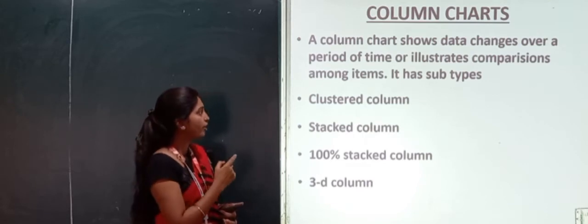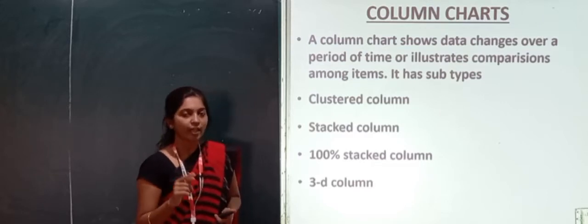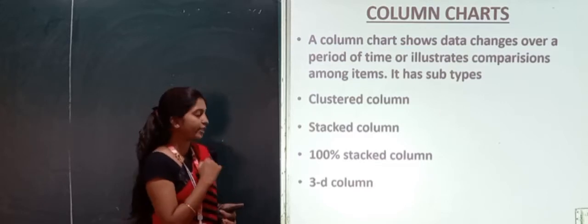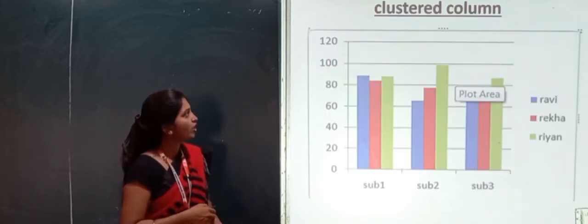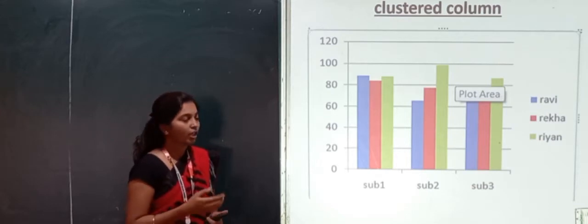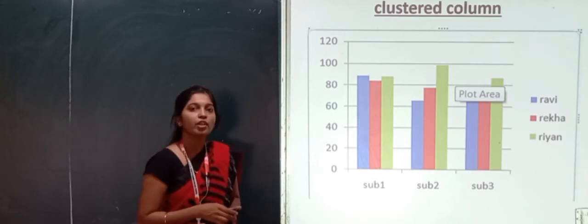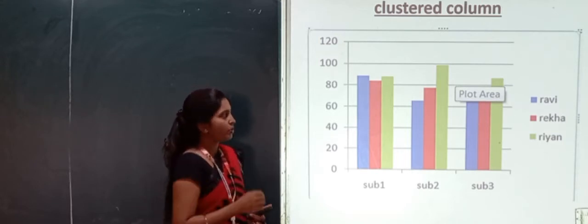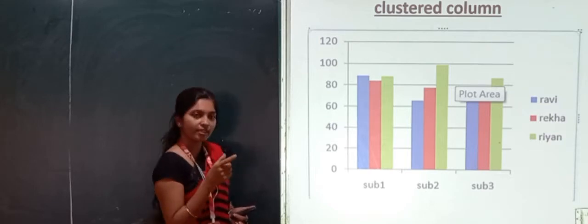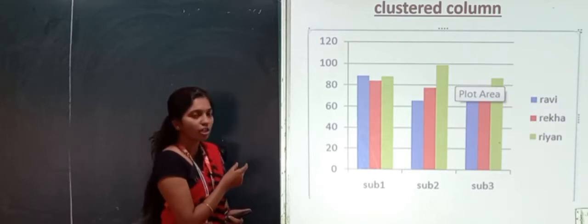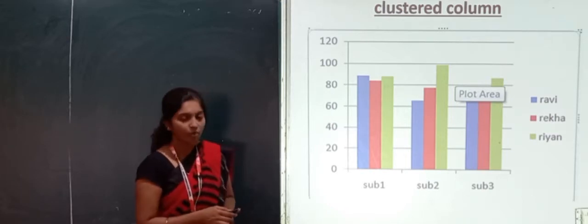Subtypes in column chart. Clustered column. Stacked column. Hundred percent stacked column. The last one is 3D column. We will see how they represent themselves. The first one is clustered column. Clustered column. How it represents? This is clustered column chart. Look at how the data is represented. The clustered column is the same as that of the column chart. Look at how the data series is illustrated there.